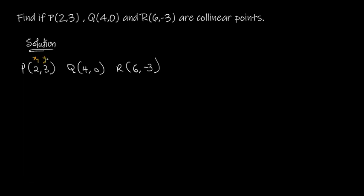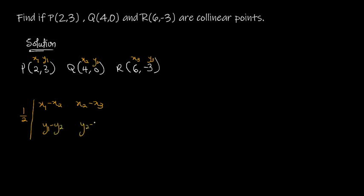I'll label the coordinates: x1 = 2, y1 = 3, x2 = 4, y2 = 0, x3 = 6, y3 = -3. We know that if P, Q, and R are collinear points, then one-half times the determinant with [x1 minus x2, x2 minus x3] on top and [y1 minus y2, y2 minus y3] on the bottom should be equal to zero.